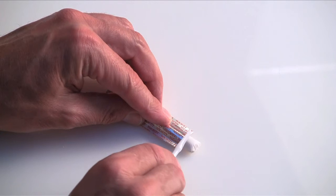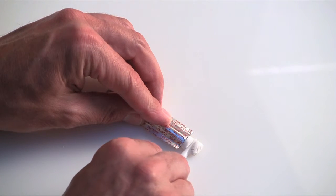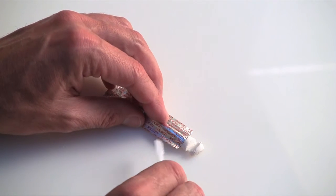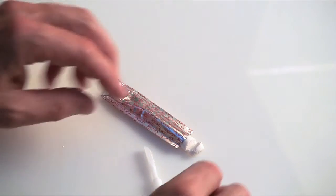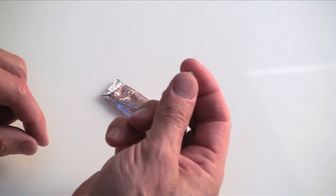Using the enclosed spatula, cut off a quantity of No Cavity sufficient to fill the cavity. Shape the material into a cone.